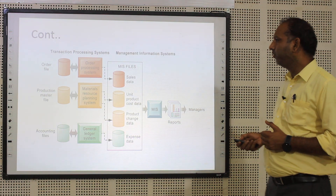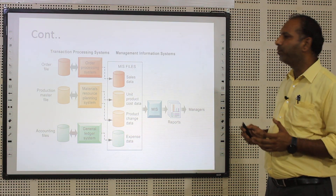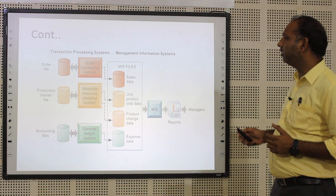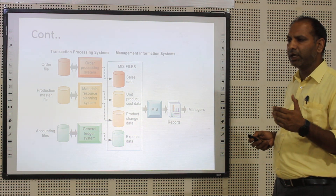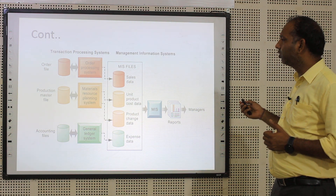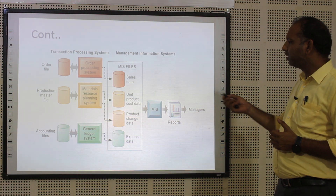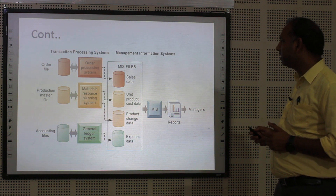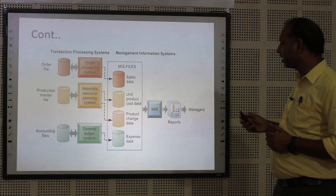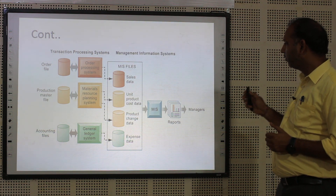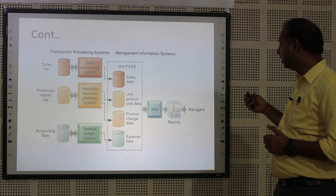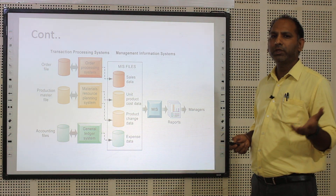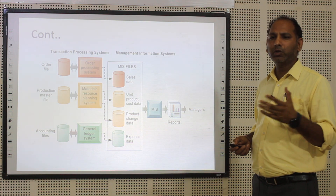This is a diagram which shows the transaction processing system with the help of a management information system. When a business is growing and creating, there are order files, production master files and accounting files. These different types of files go into the order processing system, material resource planning system, and journalization system. All these files are gathered at the MIS database where sales database, unit product cost database, product change database and expenses database are available. Finally, it goes to managers through the form of report systems, showing which type of transactions are coming and going on in the system.